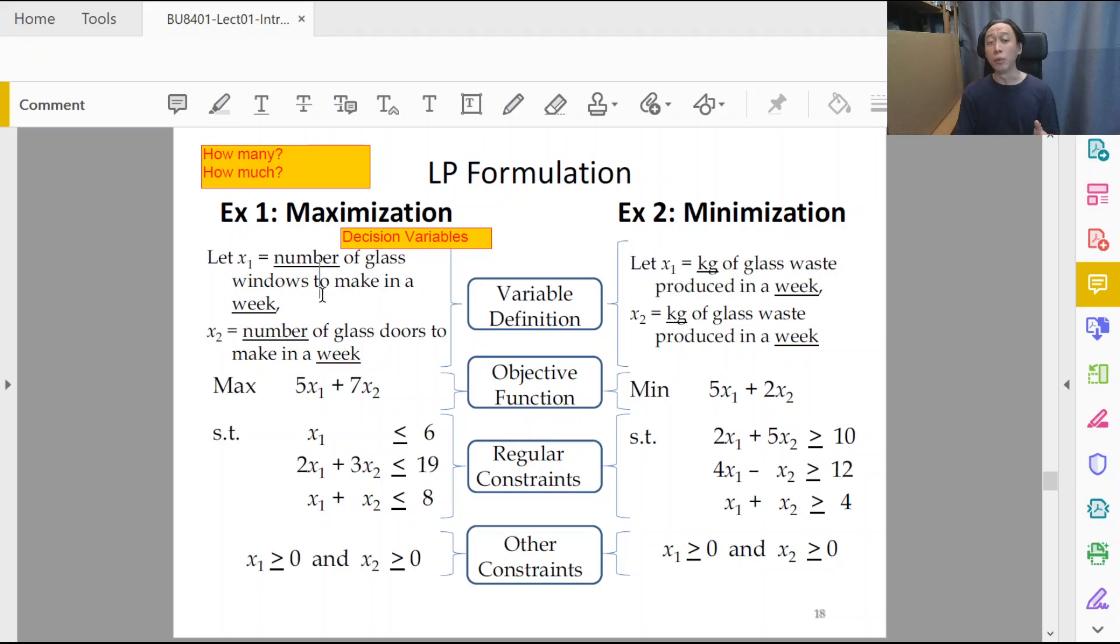Minimally, keep in mind to always include the unit and the time duration. At other times we may have to include additional attributes like when. So x1 is the number of glass windows to make in a week on Monday, and x12 is the number of glass windows to make in a day on Tuesday.